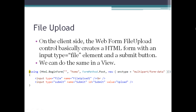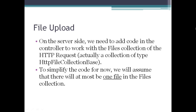On the client side, even fancy web form controls ultimately generate a standard HTML input type equals file element - it's been around forever. We can do the same in our Razor view using HTML helpers, with Begin Form making sure the method is set to POST and the enctype set to multipart/form-data so it can handle any kind of data from the file. We just need that input tag with type equals file and a submit button.